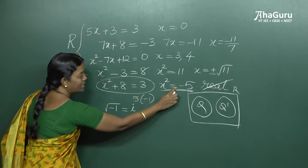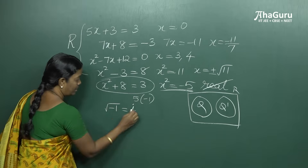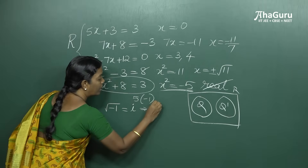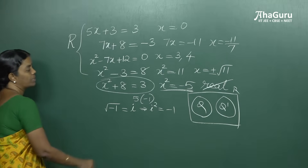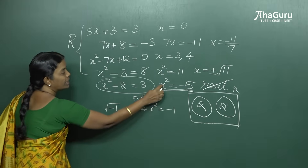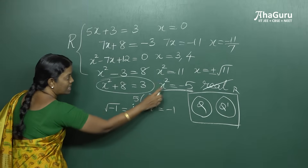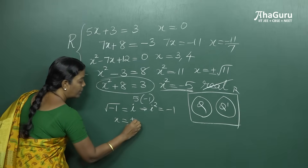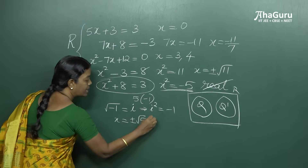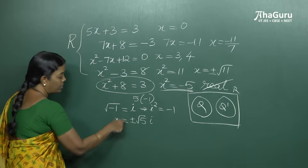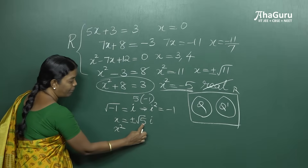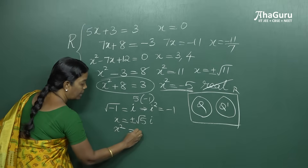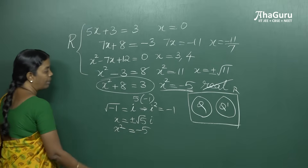When root of minus 1 equals i, this automatically implies i squared equals minus 1. So the solution for x squared = minus 5 can be written as x = plus or minus root 5 times i. When you square both sides, this becomes 5, and i squared becomes minus 1, so you get minus 5. This confirms the solution.